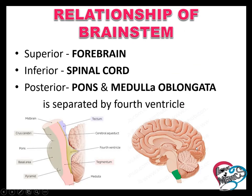This one is the brainstem. Superiorly, the cerebrum is present — that is the forebrain. Inferiorly, the spinal cord is present, and posteriorly, the pons and medulla oblongata are separated by the 4th ventricle, and the cerebellum is also present.